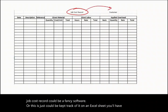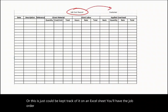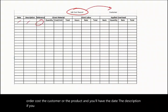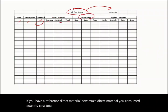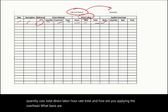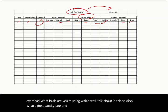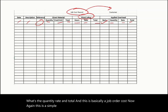The job cost record will have the job order number, the customer or product, the date, a description, a reference, direct material — including quantity, cost, and total — direct labor with hours, rate, and total, and how you are applying overhead: the basis, quantity, rate, and total. This is essentially a job order cost sheet, and it can be maintained in a computerized system or a simple spreadsheet.